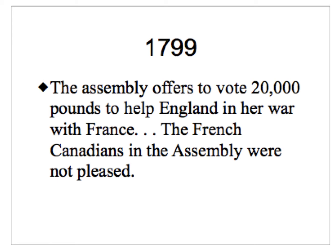In 1799, the Assembly offered to send 20,000 pounds to help England in their war against France — the war against Napoleon. While Lower Canada was no longer a French territory, the idea of sending money to fight against Napoleon and France did not sit well with the French Canadians.